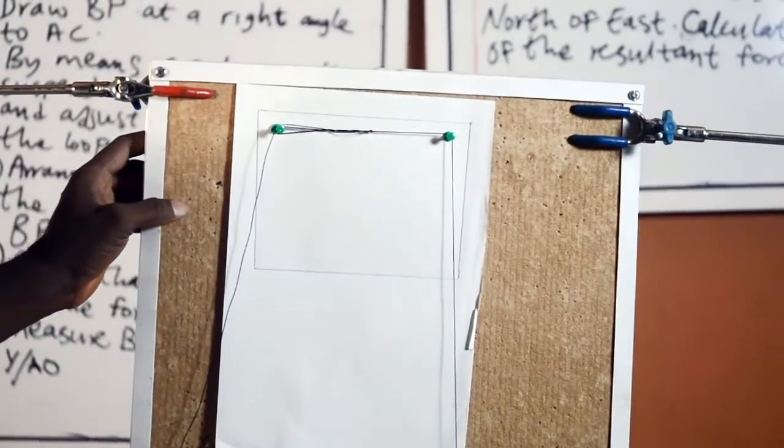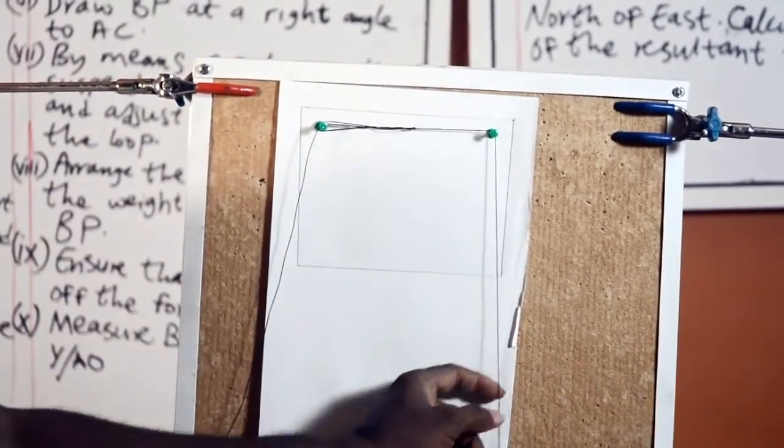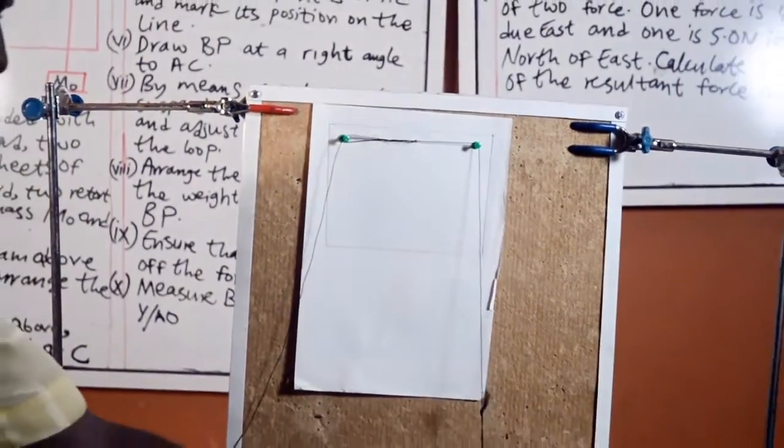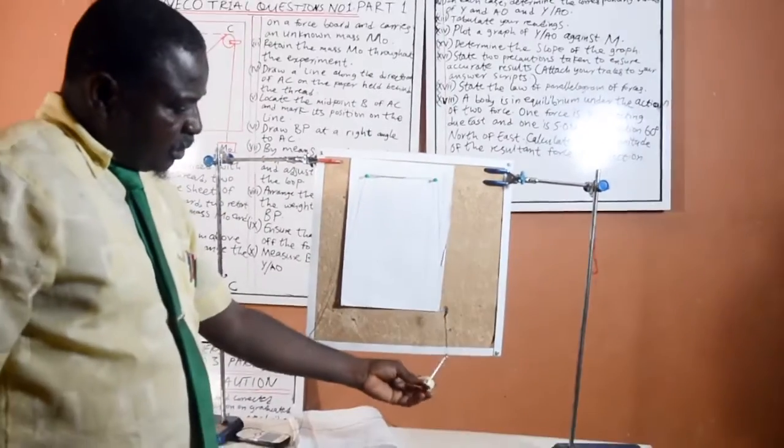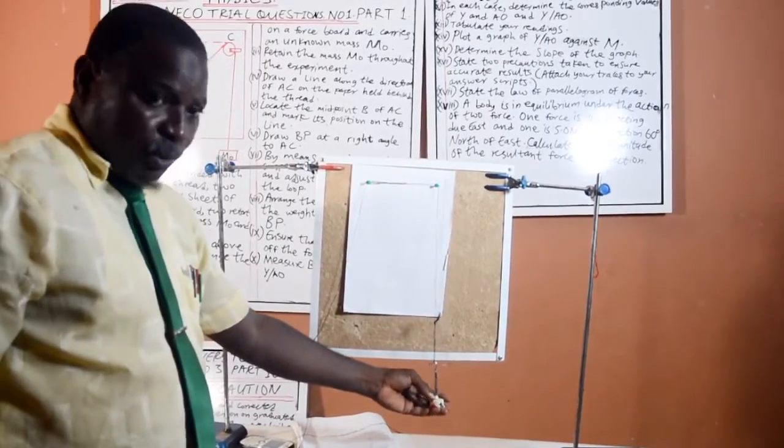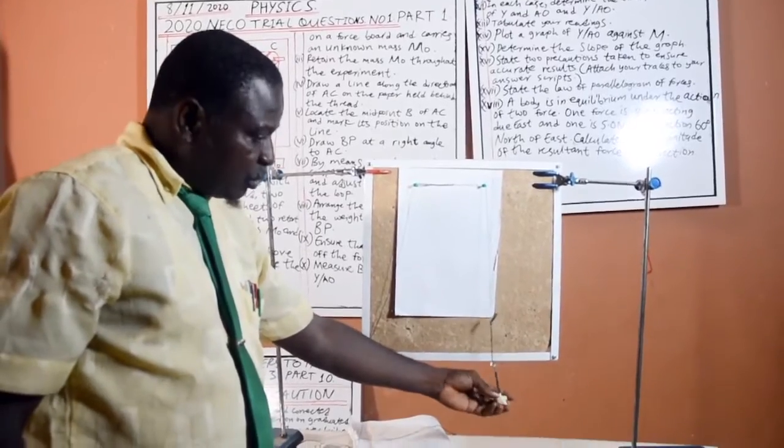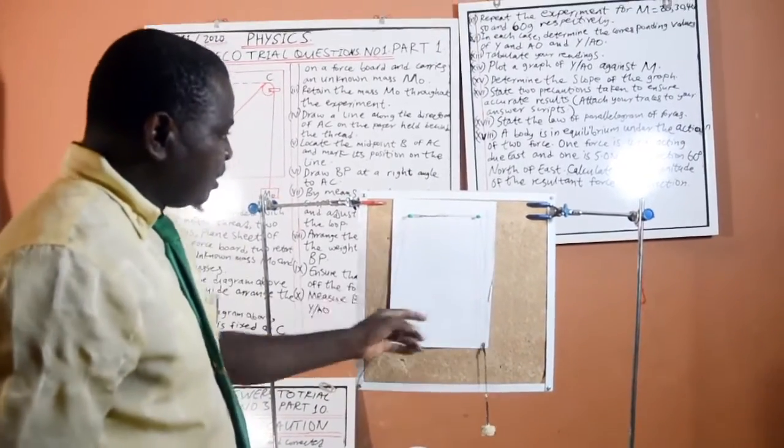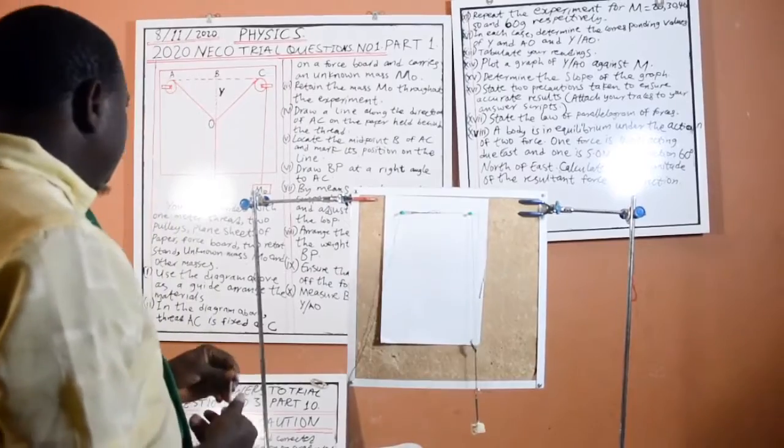Now, this is force board. These are the retort stands. This is the thread. This is the unknown mass. Your teacher will write the value of this unknown mass in the report which they will send to NECO. Now, this is thread. This is a plain sheet of paper. This is the diagram.